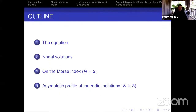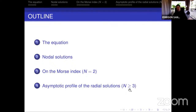This is the outline of my talk. I'm going to start with the equation, some motivation, and also positive solutions. Then I will shift to nodal solutions. Then I'm going to talk about the Morse index of special solutions in the particular case of dimension n equals 2. And then I will finish with the case for dimension n greater or equal to 3, discussing the asymptotic profile of radial solutions. The last part is the one I like most.